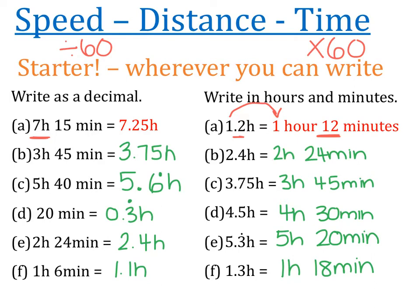Here are the answers. 3 hours and 45 minutes is 3.75 hours. 5 hours and 40 minutes is 5.6 recurring - there is a dot on top of that 6, which is very important. 5.6 hours is very different from 5.6 recurring hours. 20 minutes is 0.3 recurring hours - a third of an hour. 2 hours and 24 minutes is 2.4 hours. 1 hour and 6 minutes is 1.1 hours. For the second column: 2 hours 24 minutes, 3 hours 45 minutes, 4 hours 30 minutes, 5 hours 20 minutes, and 1 hour 18 minutes. This is the most difficult part of today's entire lesson - after this we just use these numbers with what we did yesterday.